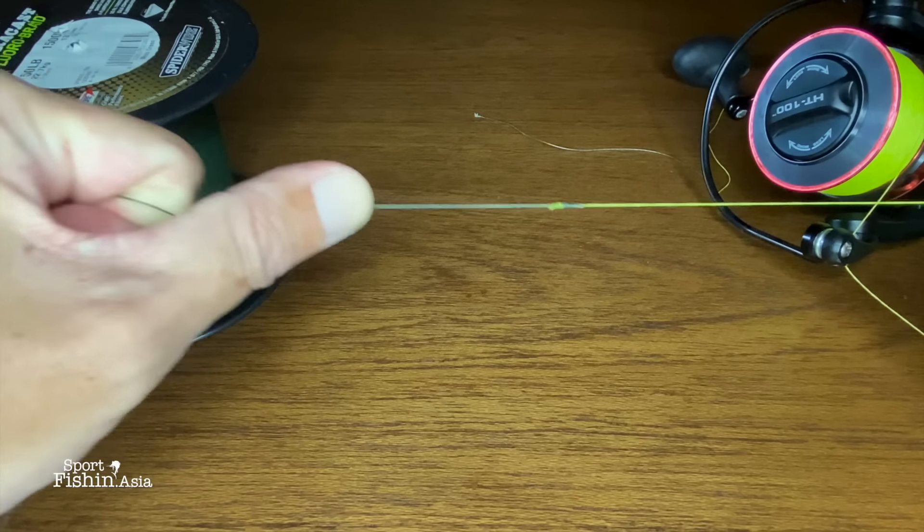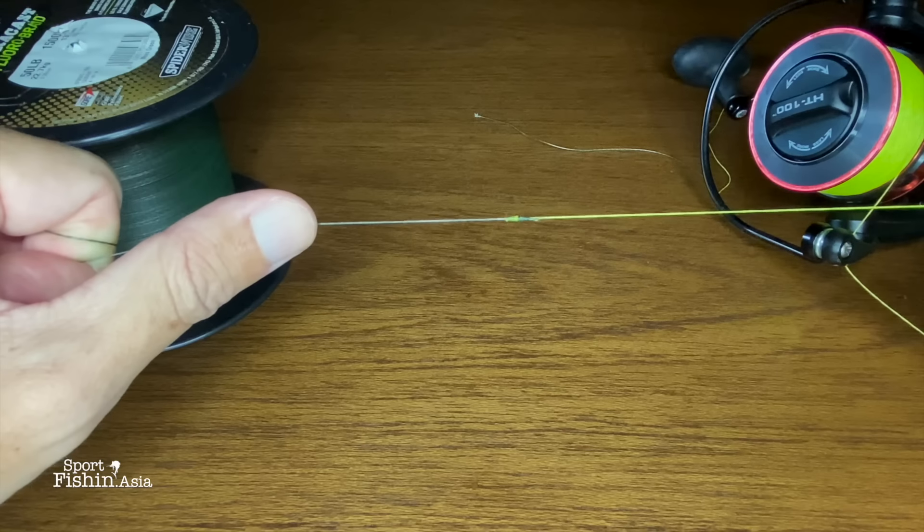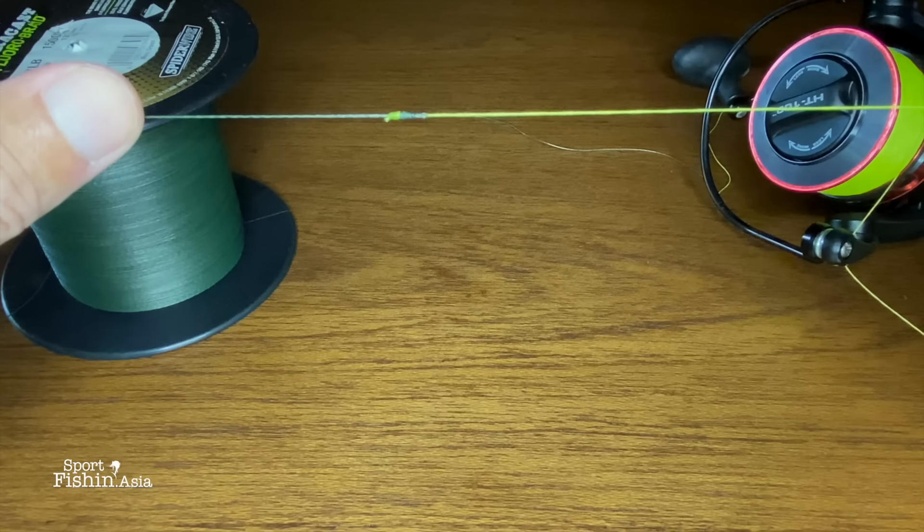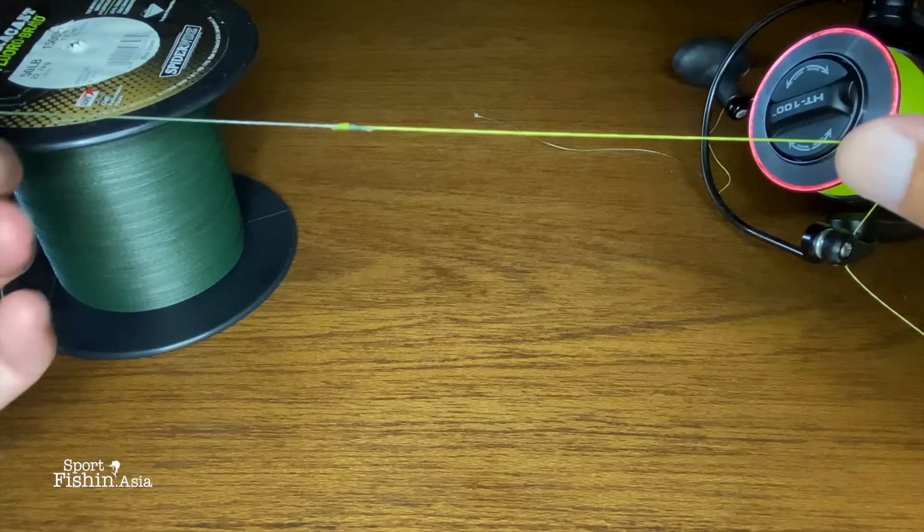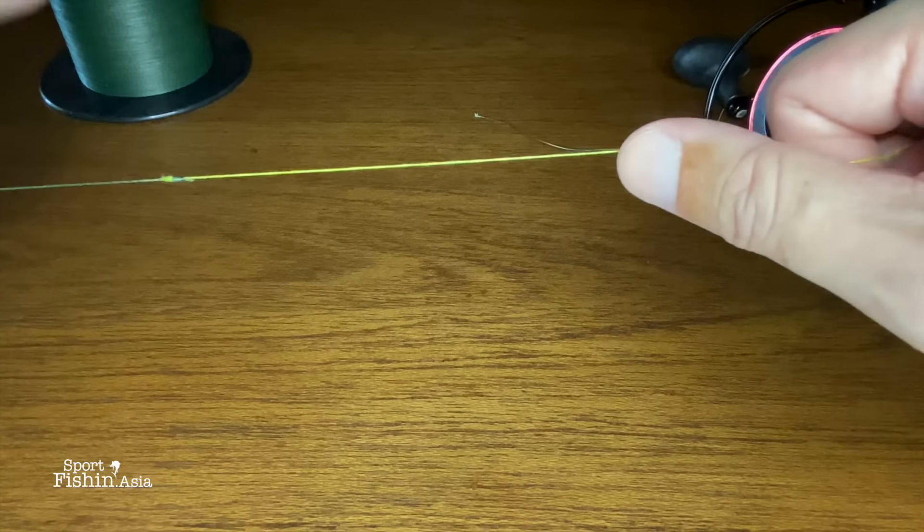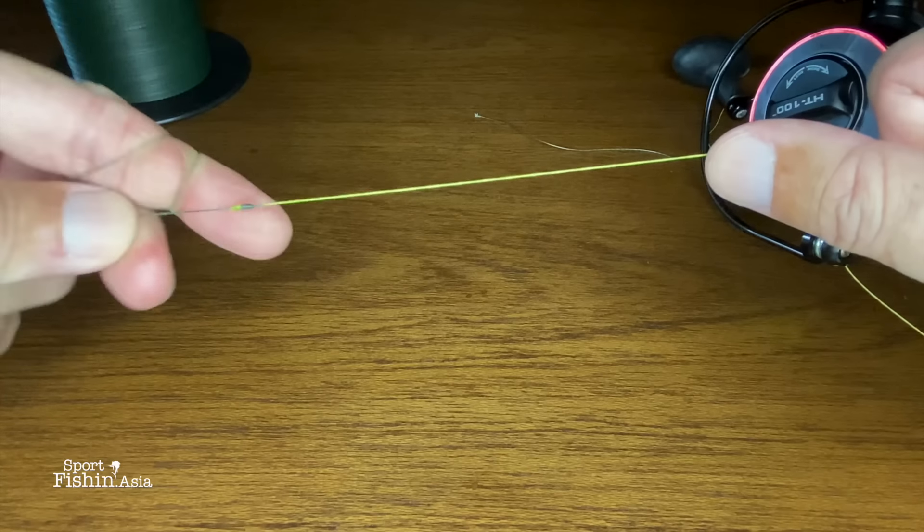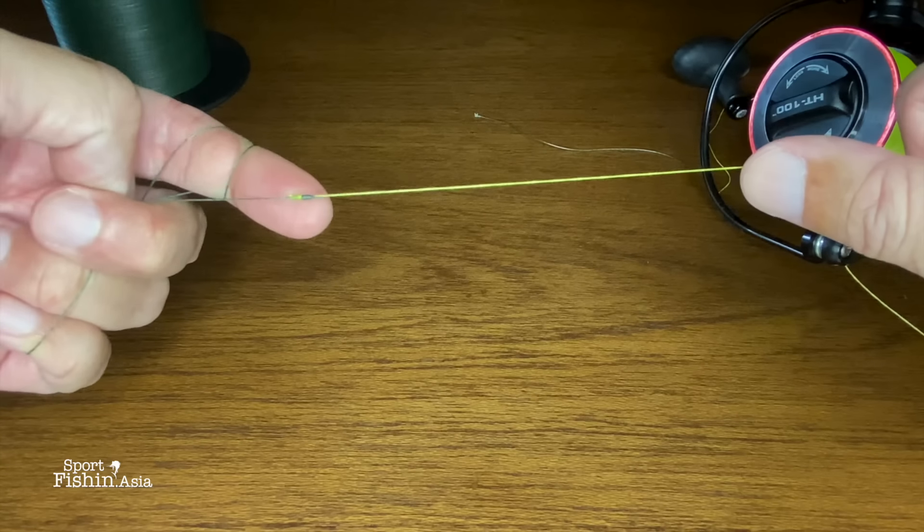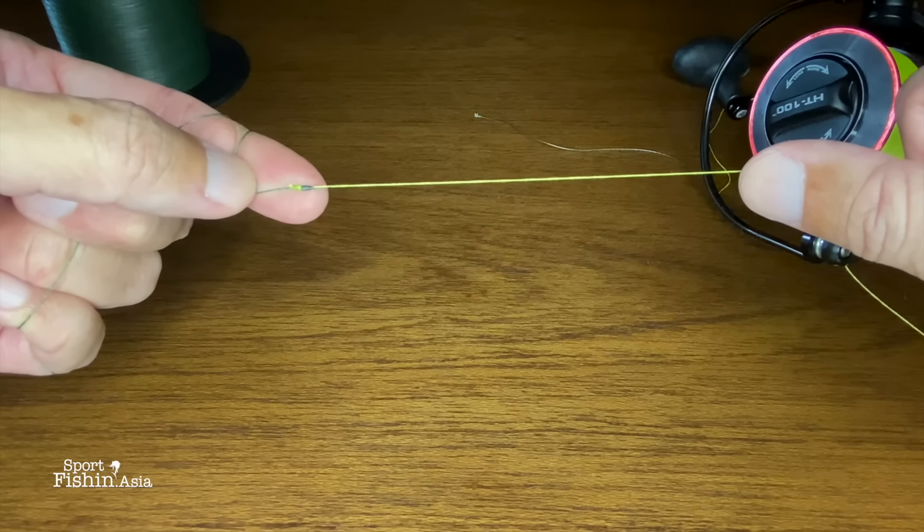This is called the double uni knot, by the way. If you just tie one side it's called the uni knot—one of the most useful fishing knots you can learn. Thank you.